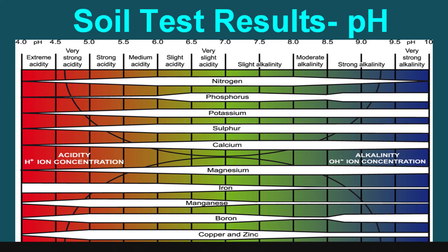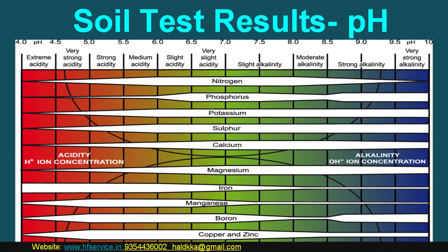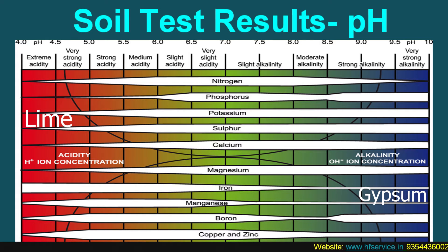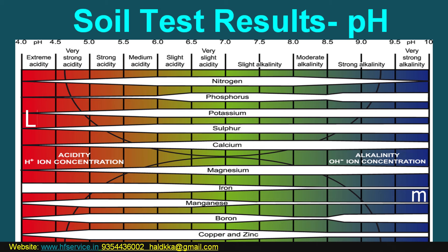Neither too much acidic nor saline or alkaline soil is good for any crop, and one needs to adopt suitable remedial measures on priority. In case where soils are more acidic, use lime; and use gypsum when it is saline or high pH. There are certain crops — which we will discuss in further episodes — that are tolerant to extreme conditions, and growing them may help to improve the soil pH.